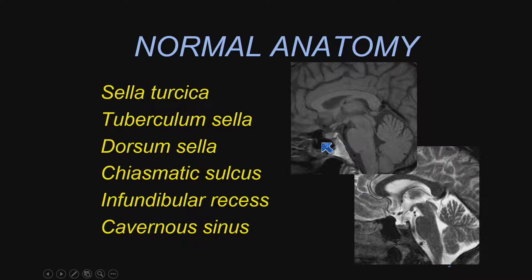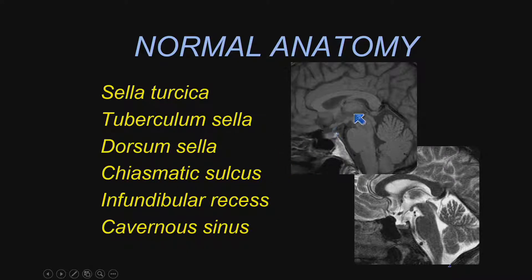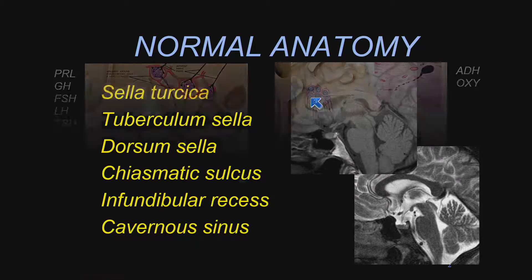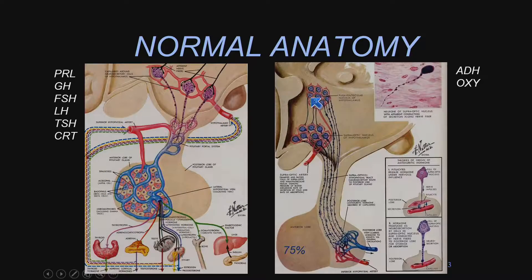The sella turcica is the small depression in the base of the sphenoid here that houses the pituitary gland — the tuberculum sella at the margin, dorsum sella in back. The tuberculum sella is the cavity that holds it, along with the chiasmatic and infundibular recess. These are little recesses of the third ventricle, which you should be familiar with anatomically, and then the cavernous sinus — that anatomy is also important to know.